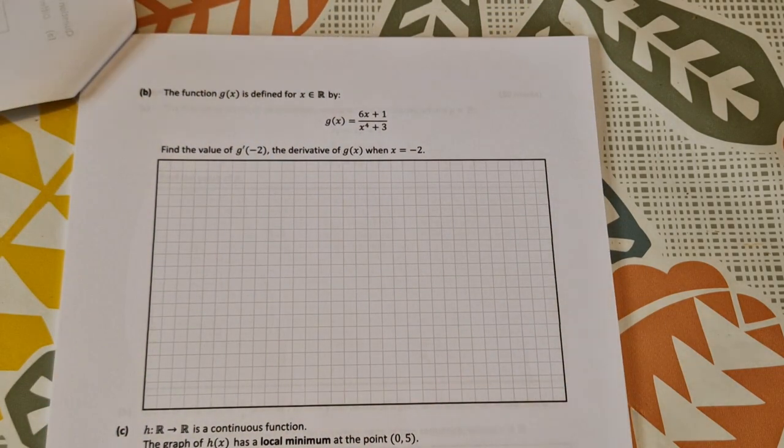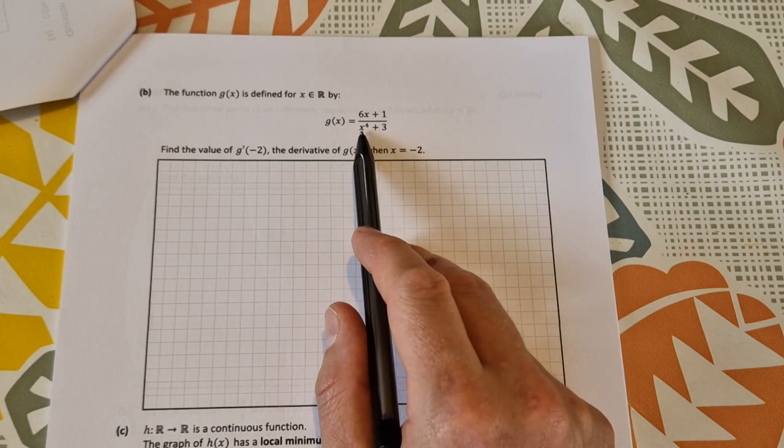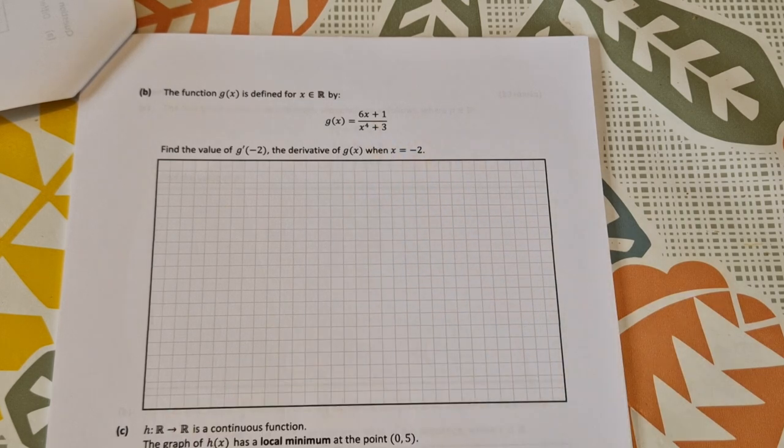Part (b): The function g(x) is defined as g(x) = (6x + 1)/(x⁴ + 3). Find the value of g'(-2), that's the derivative of g(x) when x equals -2. It's a quotient rule.